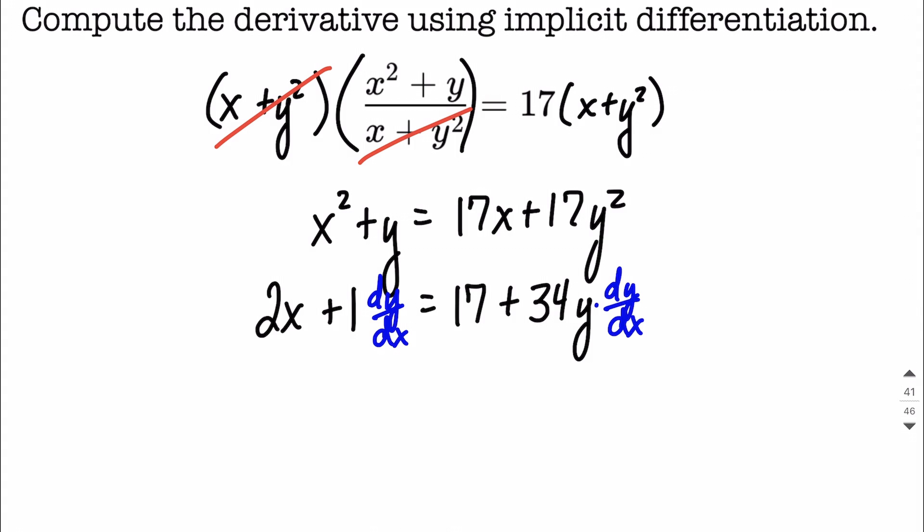All right. Next up, you'll notice we have a couple terms that have dy dx's with them and a couple terms that don't. So treat this as though it's a linear equation. We're going to get all the terms that do have dy dx's on one side and all the terms that don't to the other side.